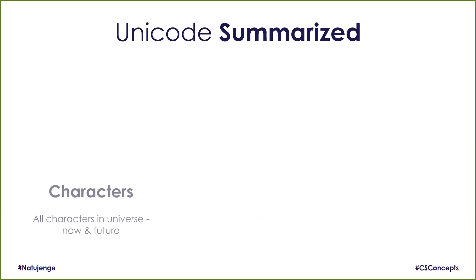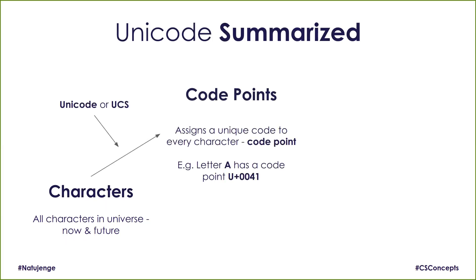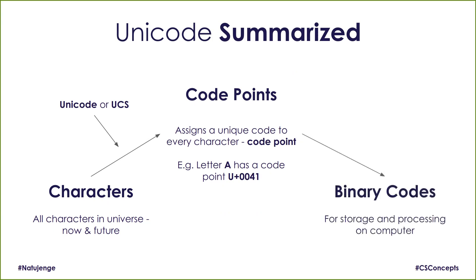Unicode works differently — it has two layers. The first is to pick all characters in the universe, now and in the future. The Unicode system's job is to assign every character a unique code, called code points. Please note that code points are not binary numbers. For them to be stored on a computer, we need to convert or transform the code points into binary numbers.